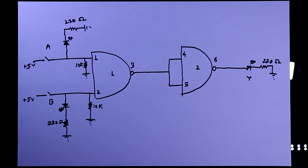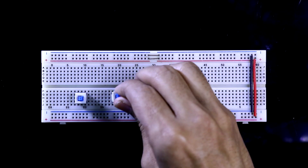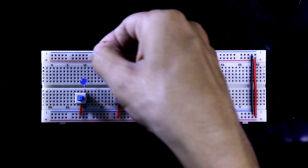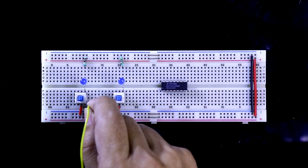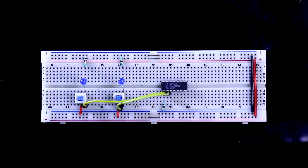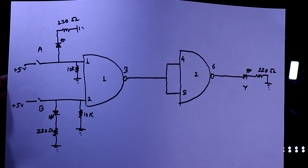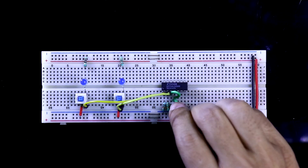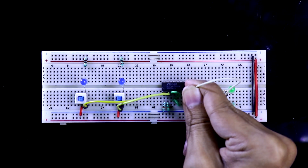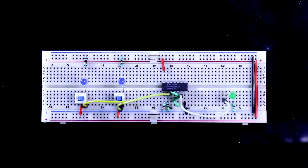Now we will see this on the breadboard. IC 7400. Input A, Input B — one pin of each switch is connected to plus 5 volt, and with the other pin I am connecting an LED and a 220 ohms resistor. Input A is connected to pin 1, input B to pin 2. With pins 1 and 2 I am connecting a 10 kilo ohms pull-down resistor. Pins 3, 4, and 5 are connected together. The output LED's negative pin is connected to ground through a 220 ohms resistor, and the positive pin is connected to pin 6. Pin 7 is connected to ground, pin 14 to plus 5 volt. So like this we have completed our connection, and now I am connecting plus 5 volt.